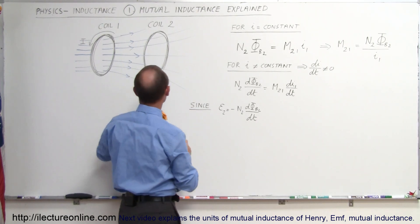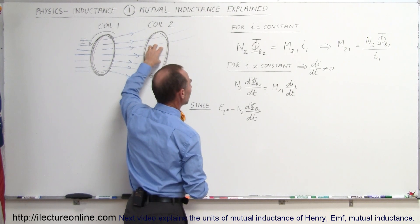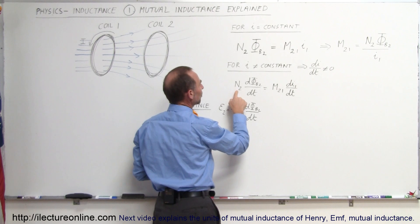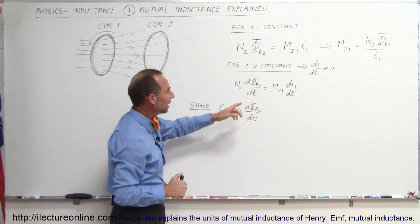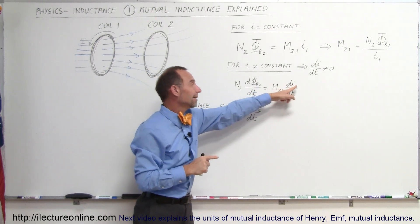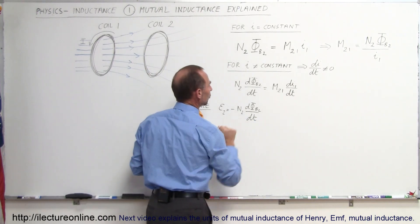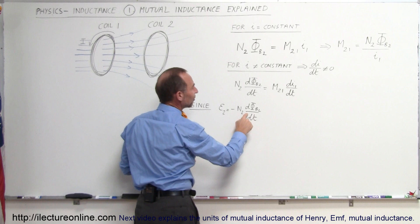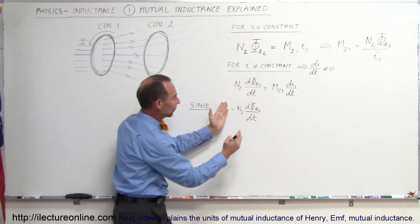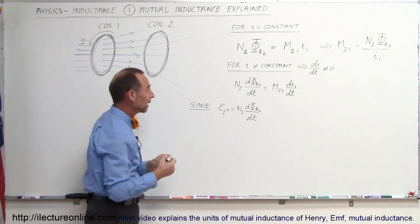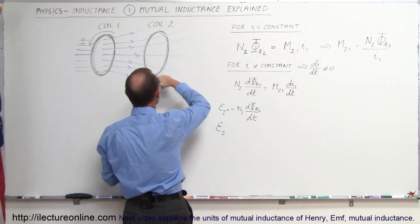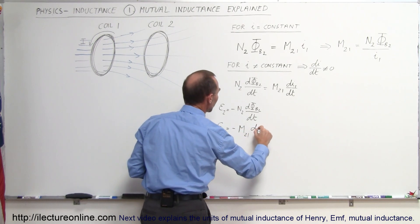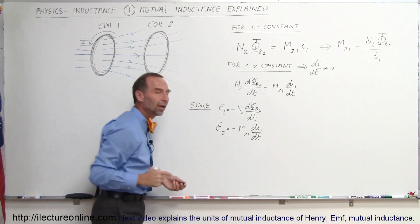Going back to the idea that changing the current in the first loop affects the second loop: we take the mutual inductance equation and differentiate both sides with respect to time. On the left side we get N2 — the number of loops in the second coil — times how fast the flux is changing in the second loop. This equals the mutual inductance M times how fast the current is changing in the first loop. Since the EMF induced in the second loop equals N2 times the rate of flux change, we can write: the EMF induced equals minus M times dI/dt of the first loop.